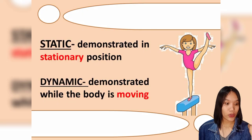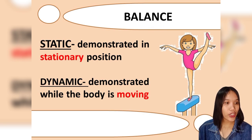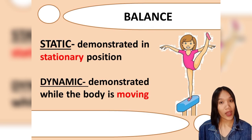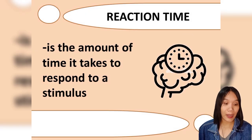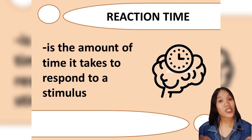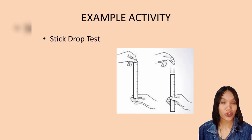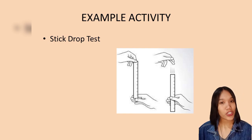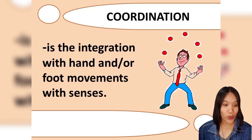Balance is the ability to stay in equilibrium in relation to changes in body position. There are two types: static balance, demonstrated in a stationary position, and dynamic balance, demonstrated while the body is moving. Reaction time is the amount of time it takes to respond to a stimulus. You can measure reaction time through the stick drop test.